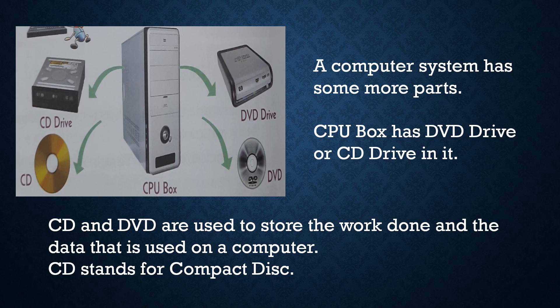A computer system has some more parts. We have already studied that a computer has 4 basic parts like CPU, mouse, monitor and keyboard. Other than these, a computer system has some more parts. CPU box has a DVD drive or CD drive in it, as we can see in the picture — CD drive on the left hand side and DVD drive on the right hand side.